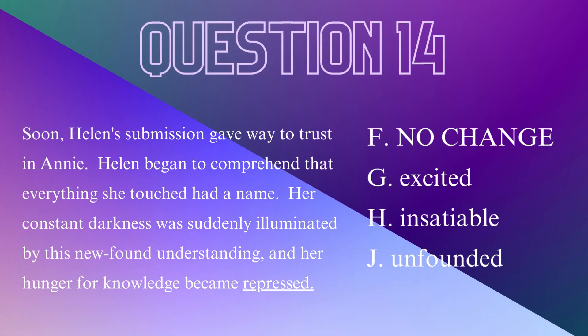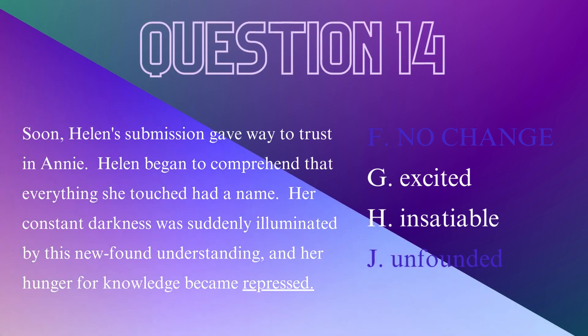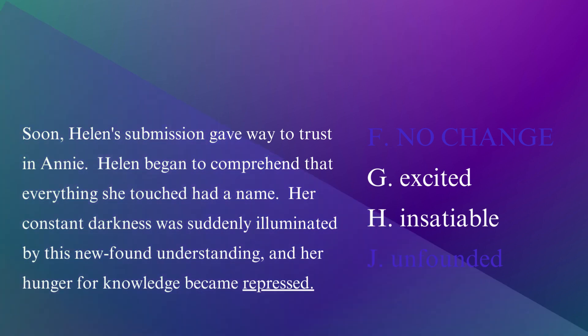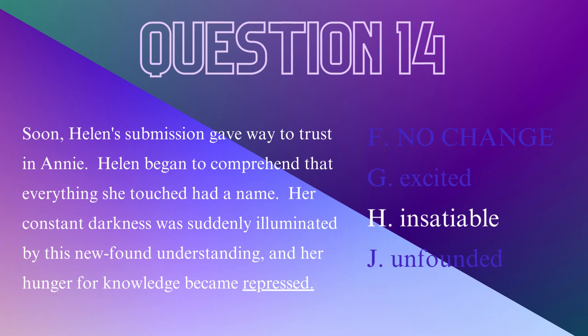Question 14. This question has to do with vocabulary — choosing the correct word that fits within the context of the sentence or paragraph. 'Her constant darkness was suddenly illuminated by this newfound understanding, and her hunger for knowledge became blank.' Choices: F, repressed; G, excited; H, insatiable; J, unfounded. One's hunger for knowledge wouldn't become repressed or unfounded. G and H are better, but 'insatiable' — meaning impossible to satisfy — best fits the sentence, as it is more precise than just 'excited.' H is the answer.